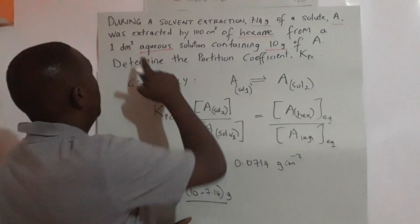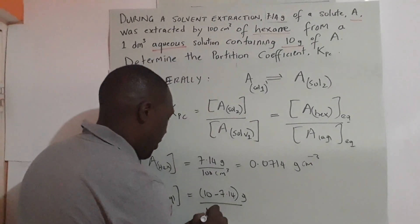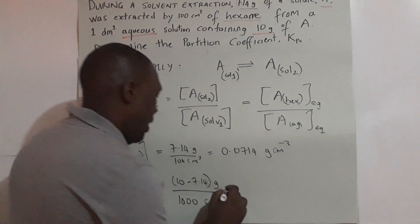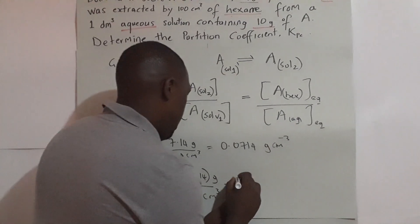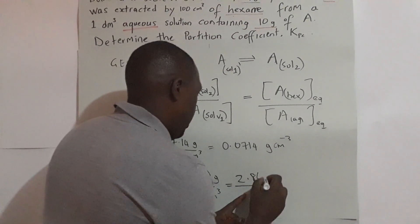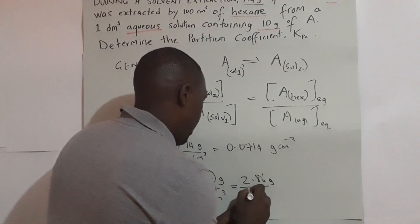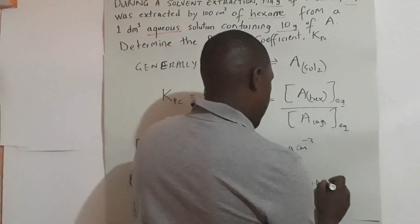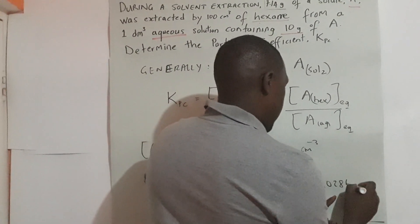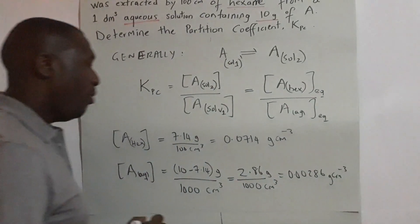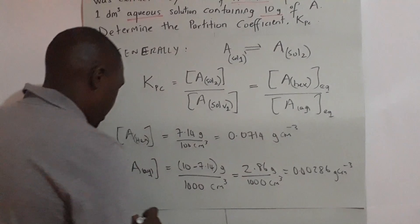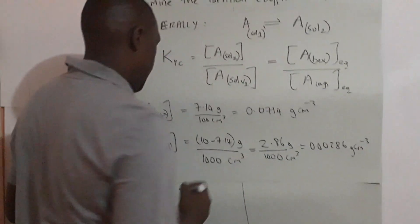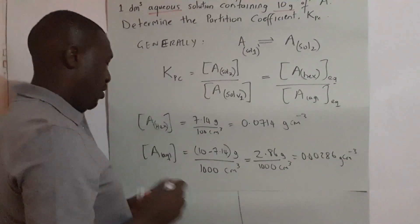The volume is 1 decimeter cube. We have to convert that to centimeter cube to make the concentrations comparable. That is 2.86 grams per 1000 centimeter cube, which is 0.00286 grams per centimeter cube. Now it's just a simple matter of substituting the concentrations into the equation.